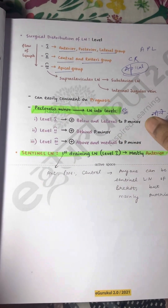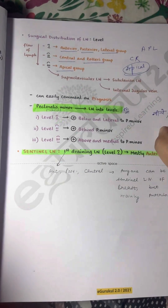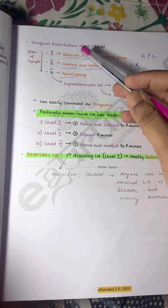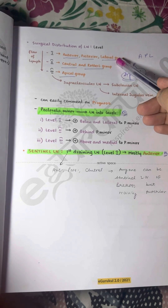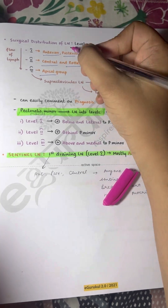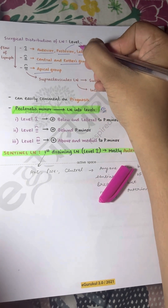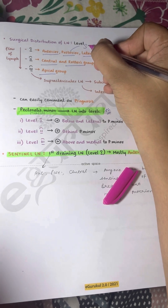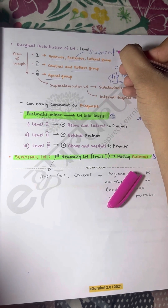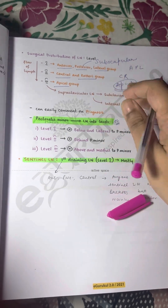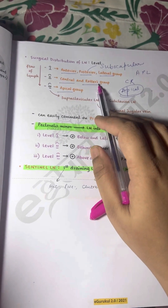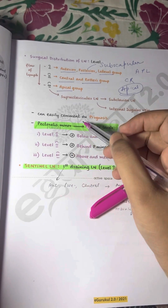There is a surgical distribution of lymph nodes into three levels. Level 1 includes the anterior, posterior, and lateral groups — with the posterior also known as the subscapular group. Level 2 is the central and Rotter group. Level 3 is the apical group.